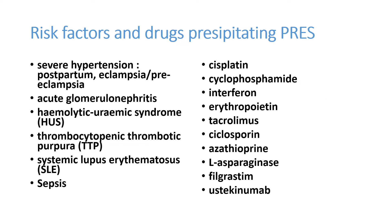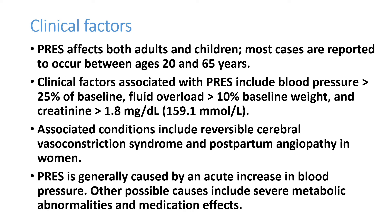The risk factors for PRES include anybody who is having high BP which is not getting controlled, or exacerbated due to any reason. Other conditions include postpartum period, eclampsia, preeclampsia, acute glomerulonephritis with hypertensive crisis, hemolytic uremic syndrome, thrombotic thrombocytopenic purpura, SLE and its exacerbations, and sepsis. A lot of drugs can also present with PRES features. PRES can affect both adults and children.